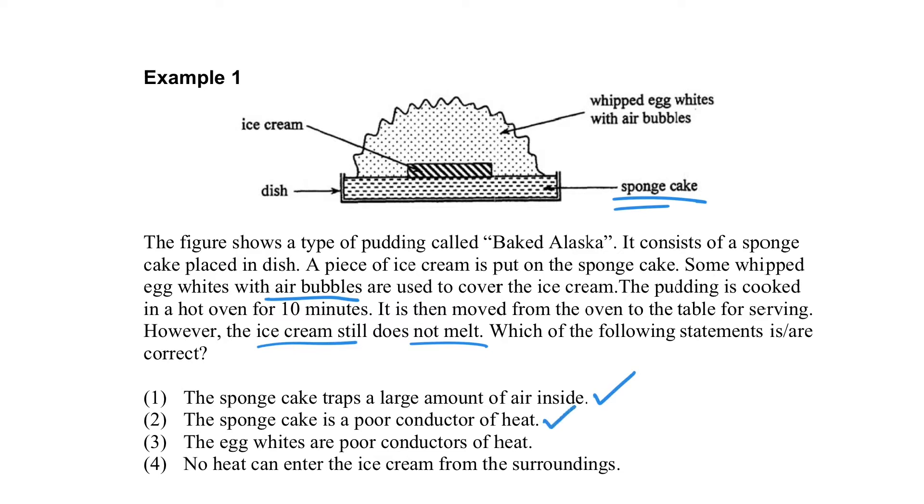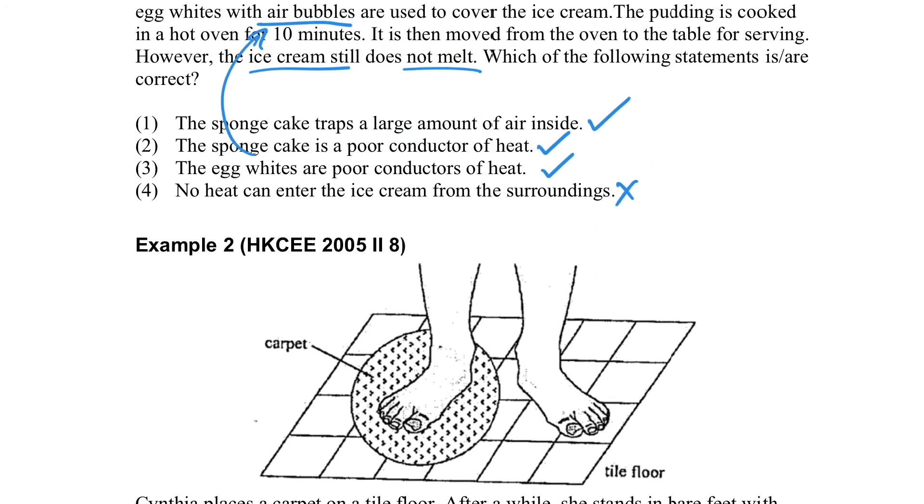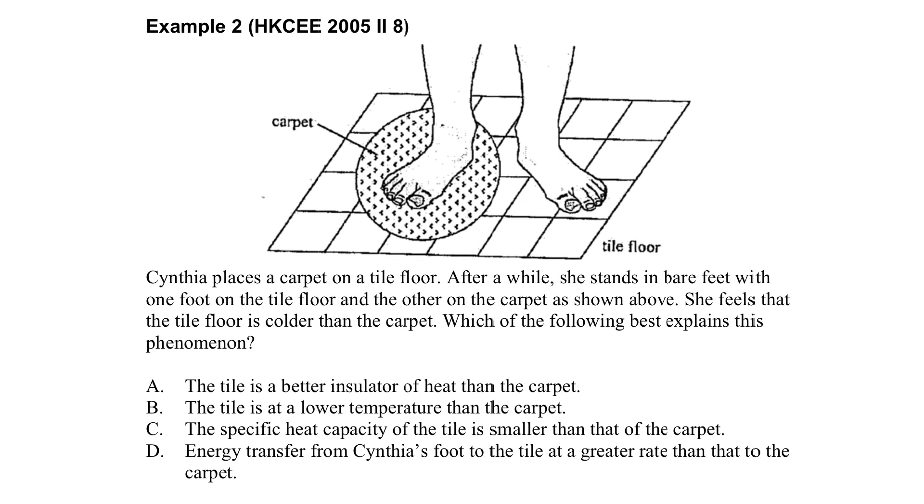Actually, because a lot of air is trapped inside the egg white and also the sponge cake, so that it forms a very good heat insulation. And it is an example to show how the food can use the idea of heat transfer to form some good heat insulation.